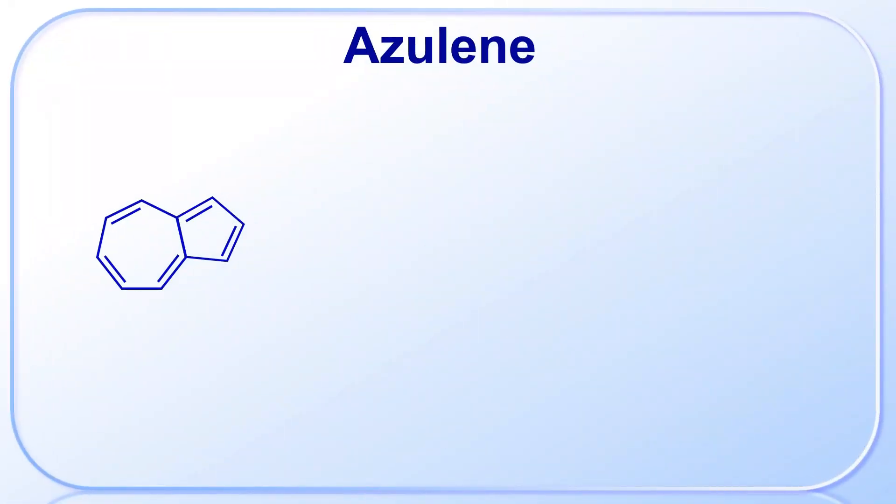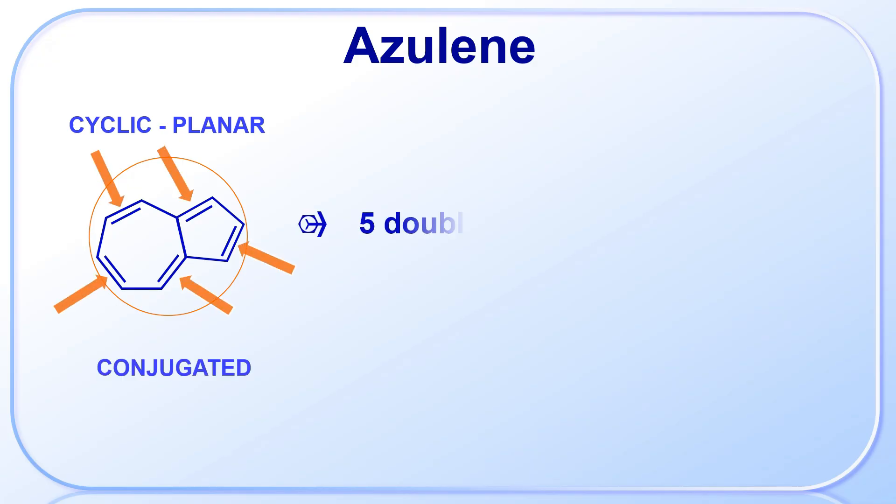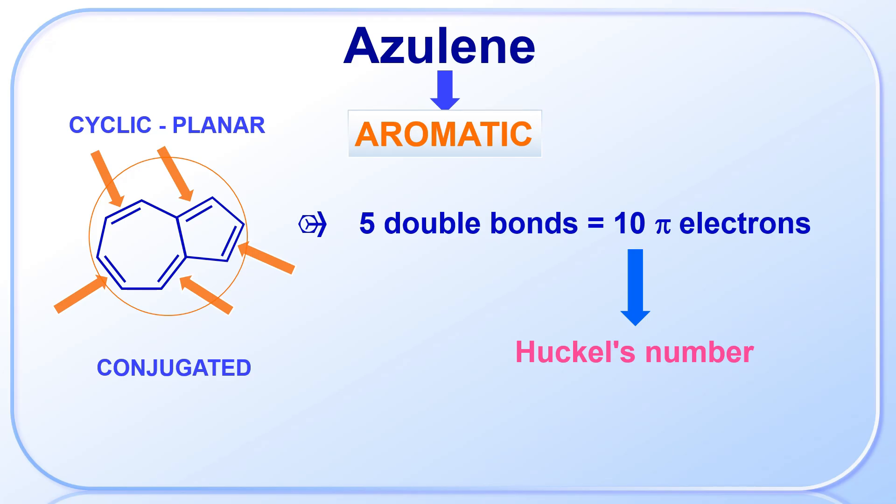The second example is azulene. It is also a cyclic and planar molecule. There are five alternate double bonds. That means there are 10 pi-electrons, and since 10 is a Hückel number, azulene is also an aromatic compound.